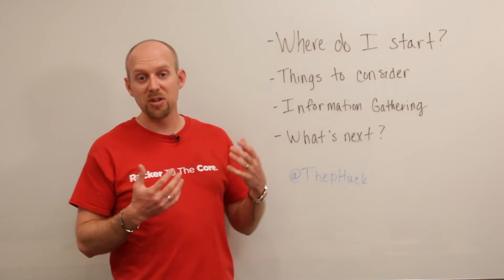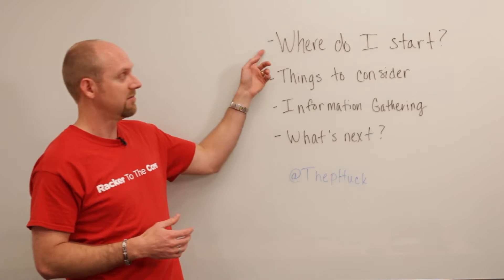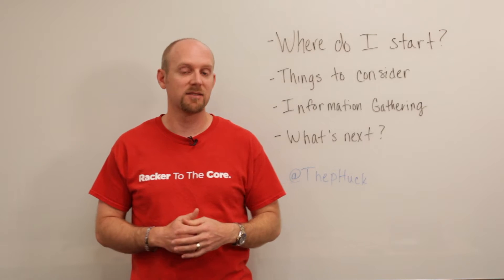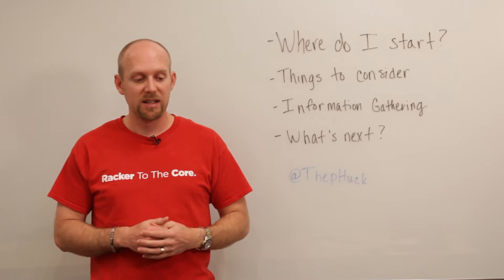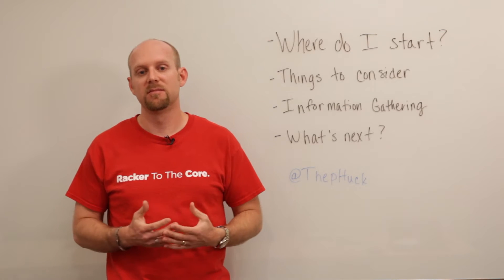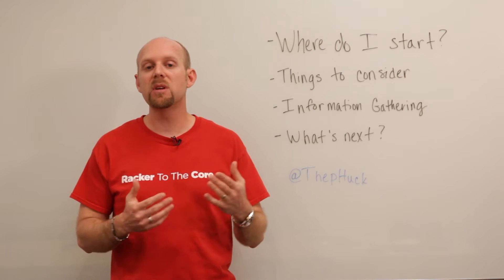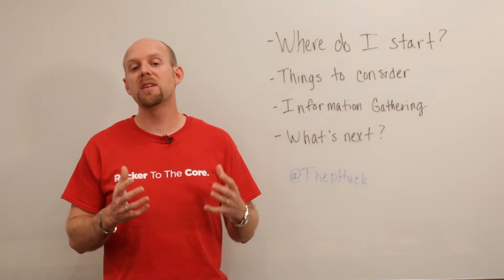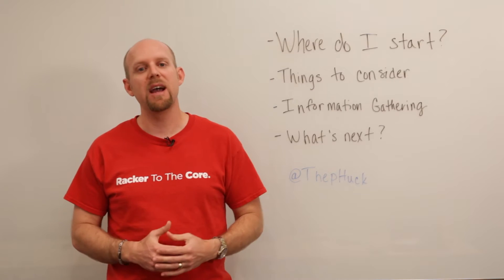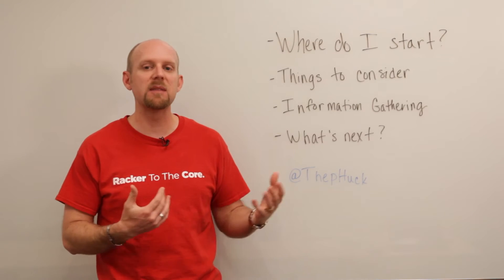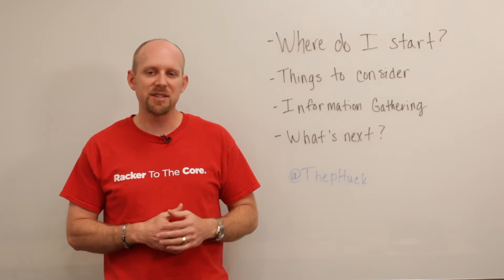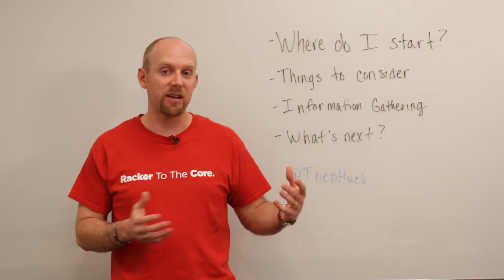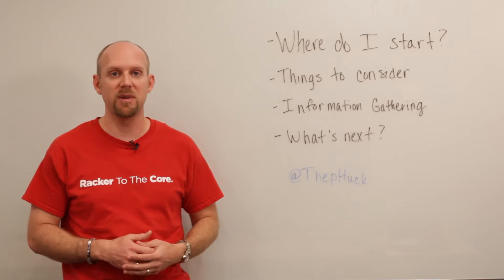Some of the biggest questions that usually come up are: where do I start? That is probably the hardest question to figure out. First things first — what do you want to protect? Do you want to protect everything? No, you don't want to protect everything. You want to think about what are the major things that you have to have up in a disaster — what's going to keep your business going. In a disaster, you probably don't care about a little inventory application tracking your office chairs. That's not a big deal. You've got bigger things to worry about.